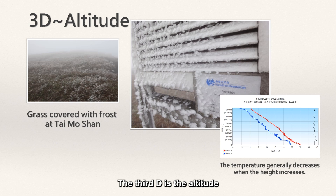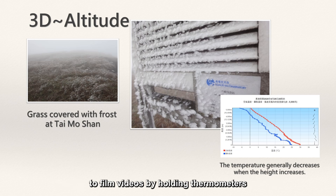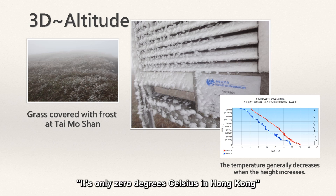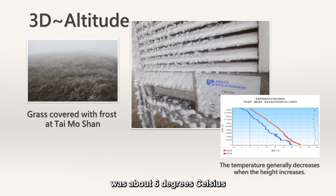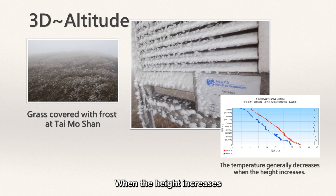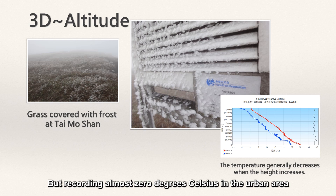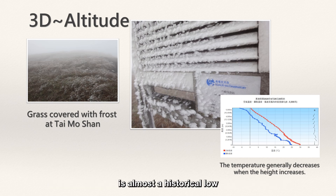The third D is altitude. Do you remember when many people went to the hilltop of Tai Mo Shan in winter to film videos holding thermometers and told people that it's freezing — it's only 0 degrees Celsius in Hong Kong? In fact, the temperature recorded by the Hong Kong Observatory was about 6 degrees Celsius. Height is the cause of the temperature difference, because temperature changes with height — when height increases, temperature generally decreases. Therefore, recording 0 degrees Celsius in Tai Mo Shan during winter isn't difficult, but recording almost 0 degrees Celsius in the urban area is almost a historical low.